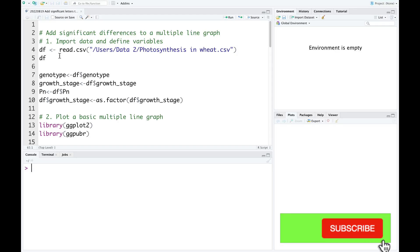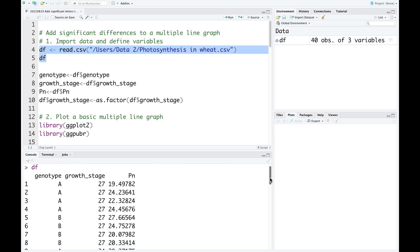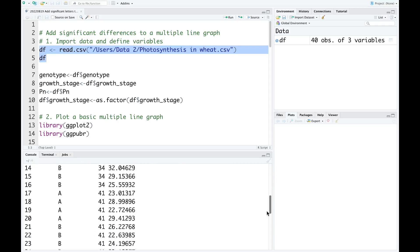First of all, we need to import the data and define variables. The data I use today is the effect of genotype growth stage on photosynthesis rate of wheat. There are two genotypes, A and B, and there are different growth stages from 27 to 69 days after showing.